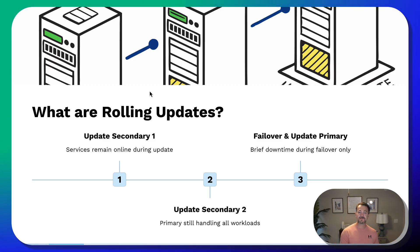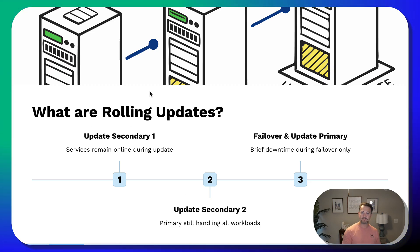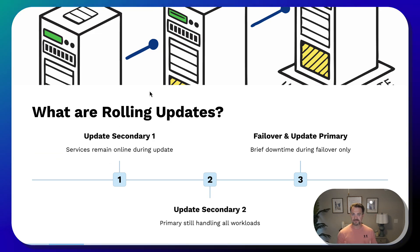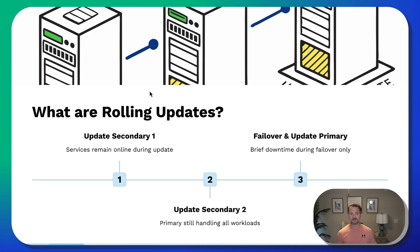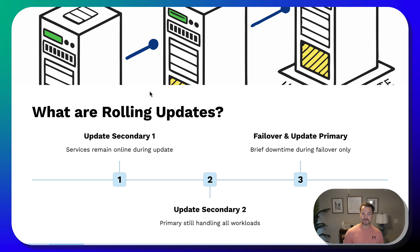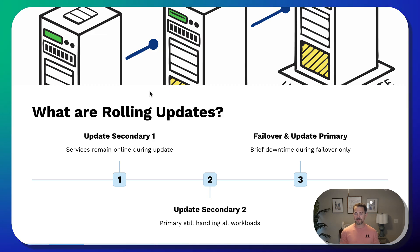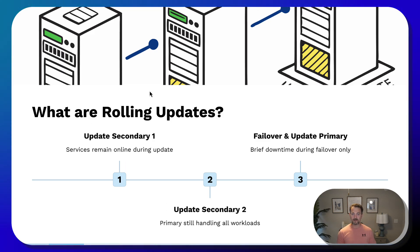Step six is to wait until the synchronization state is synchronized. You want to make sure that's the case for all of the secondary replicas that were just patched — however many replicas you have, make sure that anyone you've patched has returned back to the synchronized state. Step seven is to failover the AG to a secondary replica. This is the step where you're severing all of those connections whenever you do a failover — although quick, it will happen.